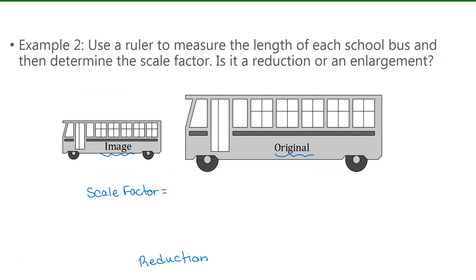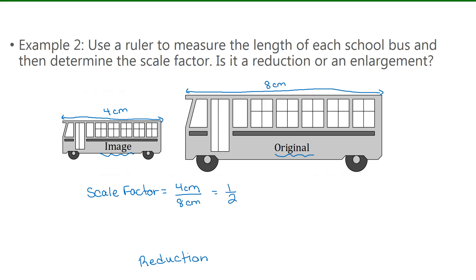The scale factor is the image length over the original length. Place your ruler along the top of the bus and measure in centimeters or millimeters. Then place your ruler along the corresponding length on the original bus — for that I got 8 centimeters. You can express the scale factor in a variety of ways. I'm going to write it as 1 half, which is less than 1.